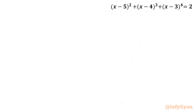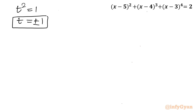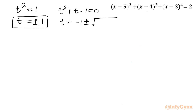Solving both factors: from t²=1, taking square root gives t = ±1. From t²+t-1=0, using the quadratic formula: t = (-1 ± √(1+4))/2 = (-1 ± √5)/2. So two irrational solutions.